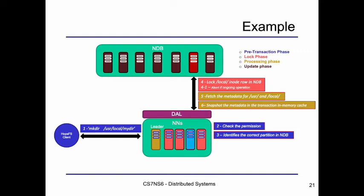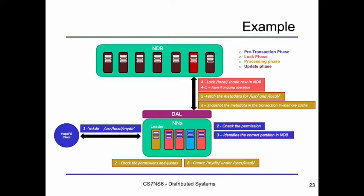This ensures that if a name node fails during a transaction, the consistency of the metadata in the storage layer would not be affected. Next, we check if the destination has write permission and enough room to create a new directory. Then the inode operation is performed by processing the metadata in the per-transaction cache. Updated and new metadata generated during the transaction is sent to the database in batches in the final update phase. Then the transaction is either committed or rolled back.